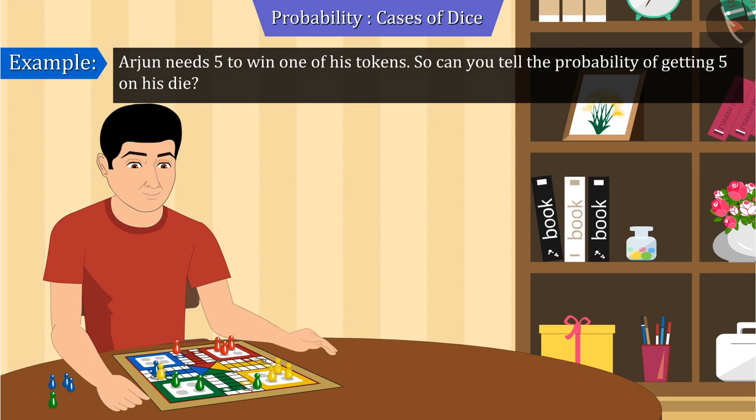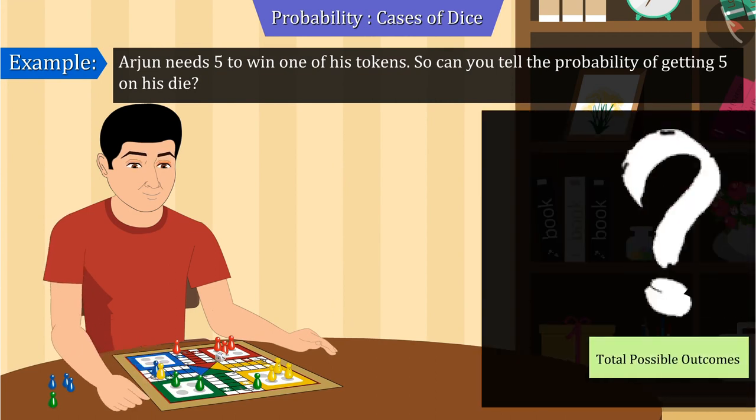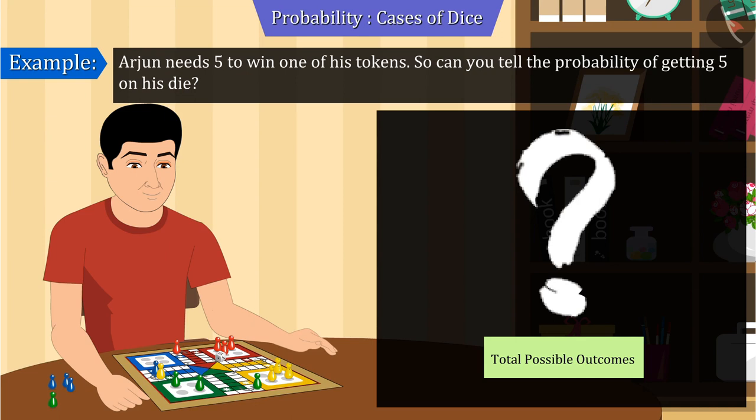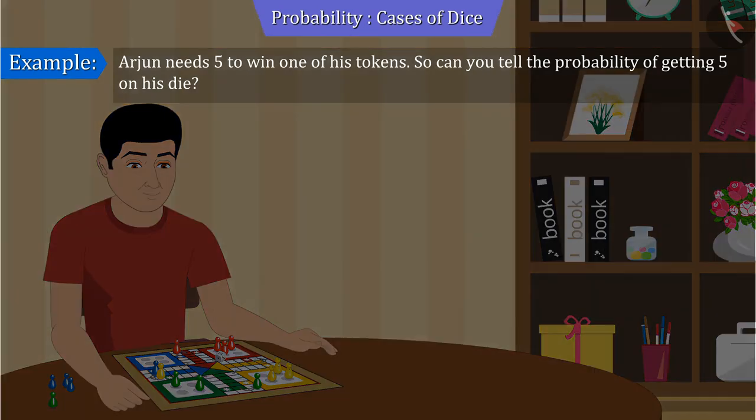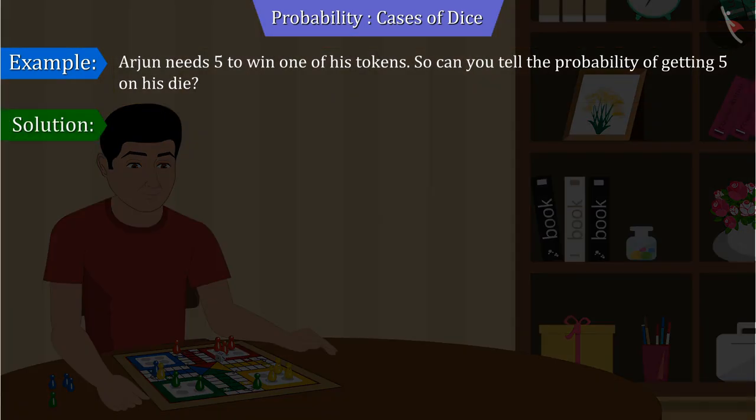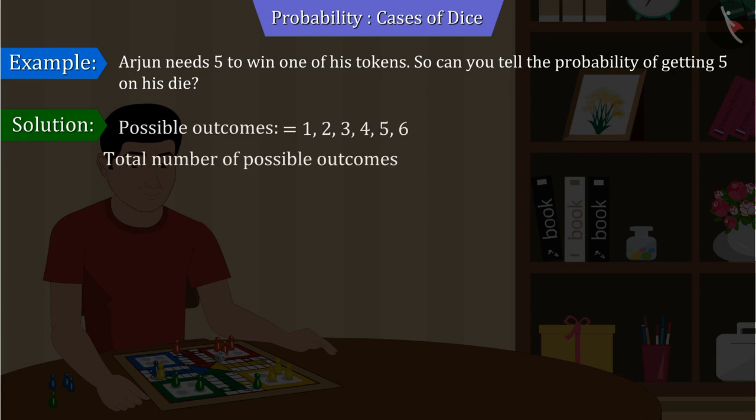Can you tell how many possible outcomes can we get while throwing a die? Absolutely right! On throwing a die, the outcome can be any number between one to six. So the total number of possible outcomes will be six.